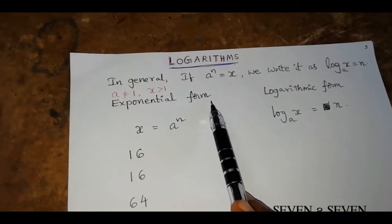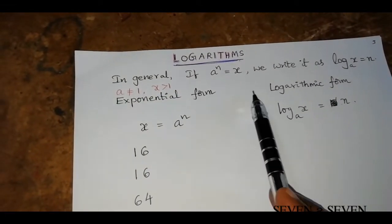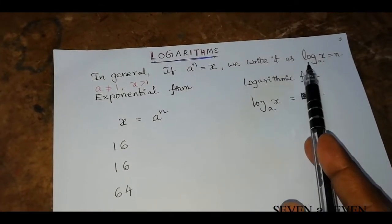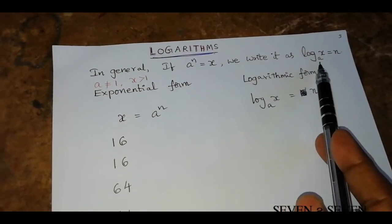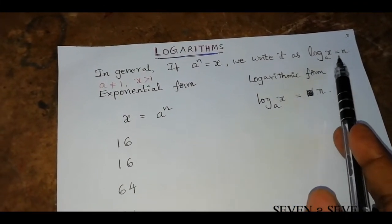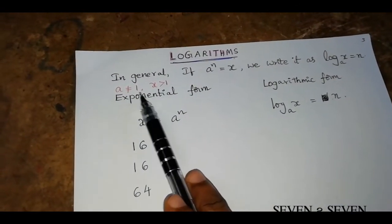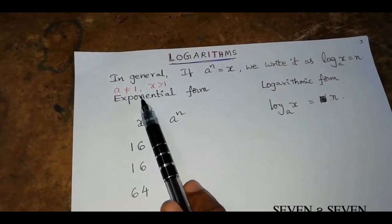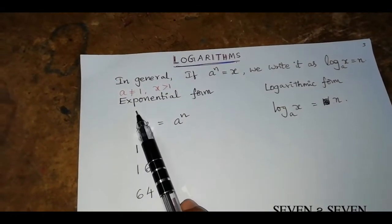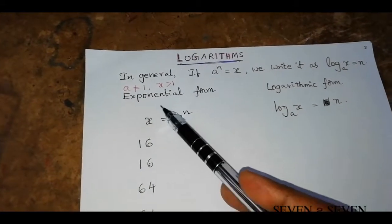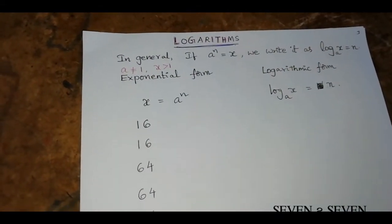If a power n is equal to x, we write it in the form of log x base a equal to n. That is, the exponential form a^n = x is equivalent to the logarithmic form log base a of x equals n.